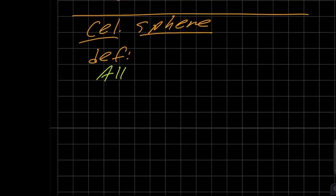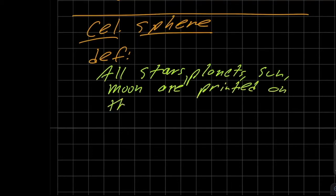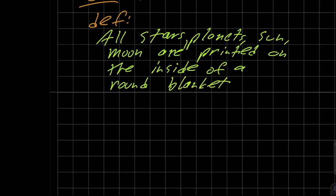All stars, planets, sun, moon, in other words, anything that you would see up there, are printed on the inside of a round blanket, inside of a round blanket that covers the earth.